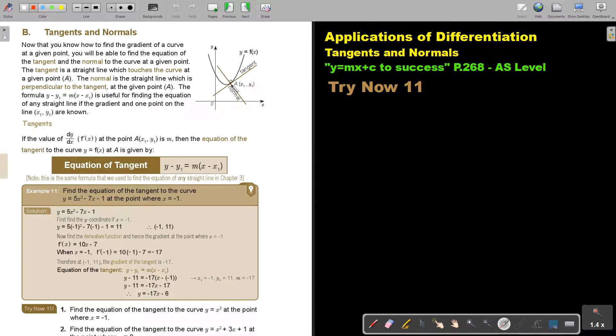A tangent is just touching the curve there. And a normal is always making 90 degrees to that tangent, also going through that touching point. The tangent is a straight line which touches the curve at a given point A. The normal is the straight line which is perpendicular to the tangent at the given point A. The formula y minus y1 equals m(x minus x1) is useful to finding the equation of any straight line if the gradient and one point on the line (x1, y1) are known.